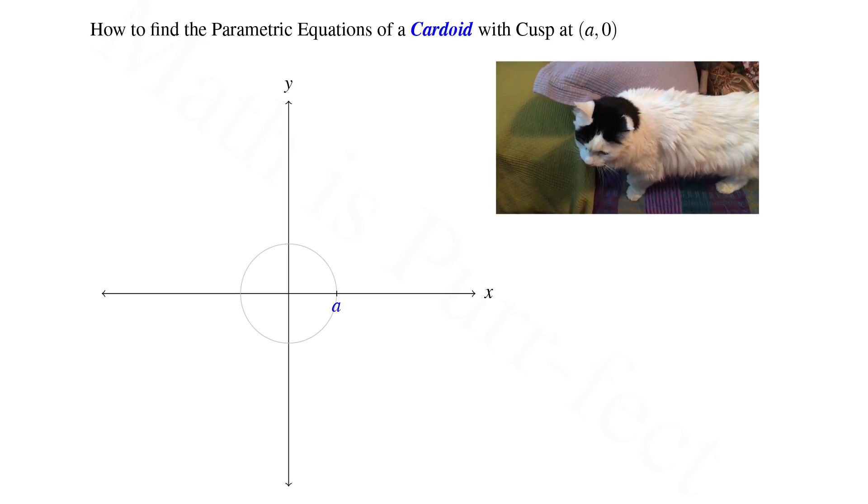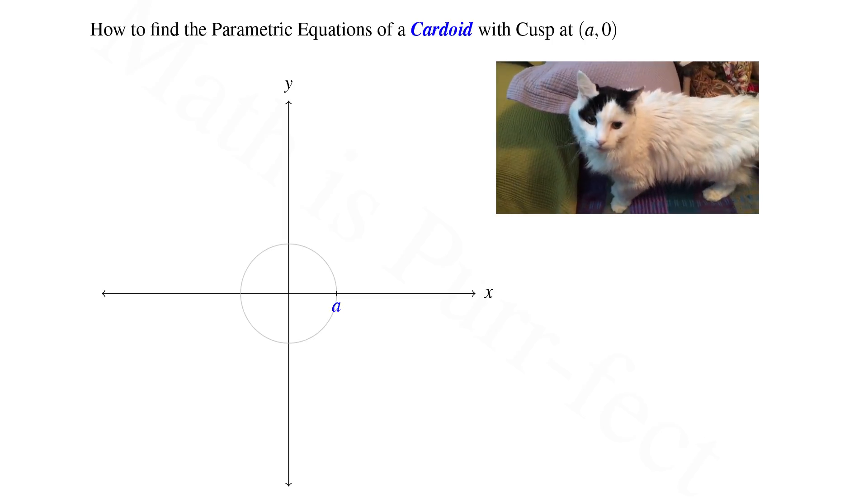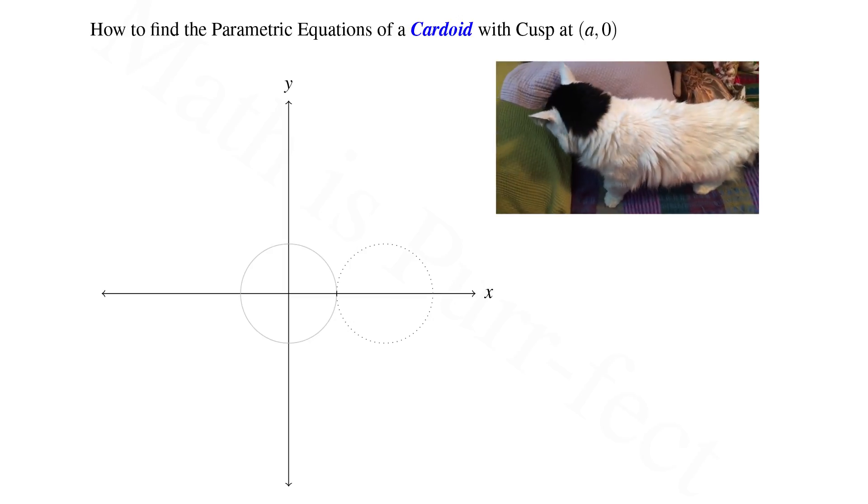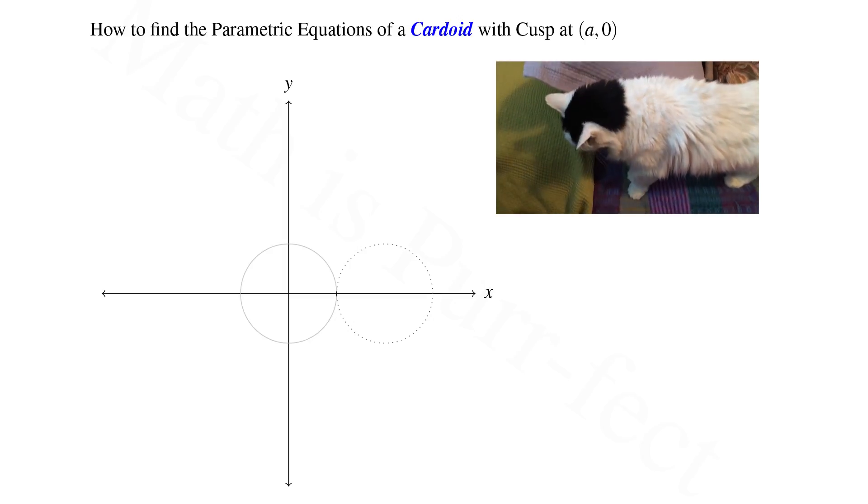First, consider a circle of fixed radius a, centered at the origin. Let's take a second circle of radius a and place it adjacent to the first along the positive x-axis.